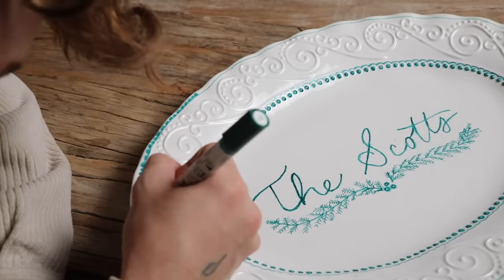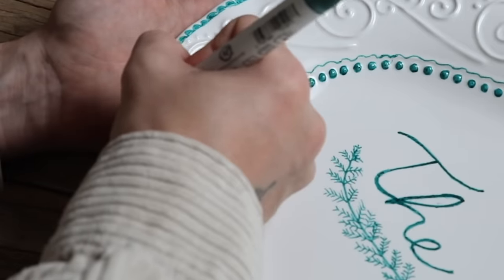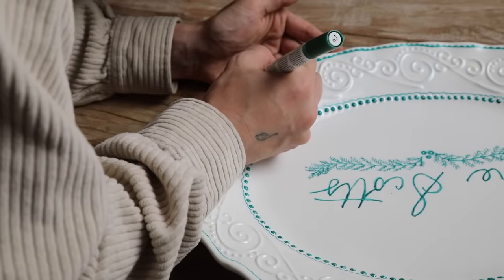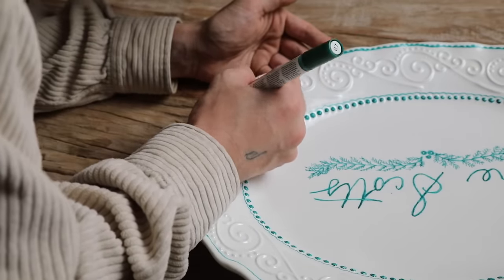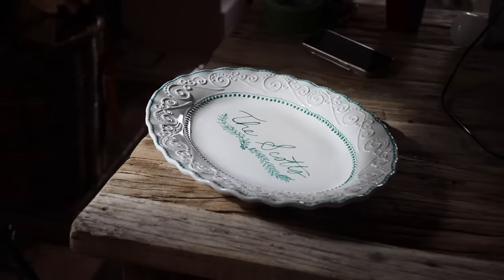Once you are all done, you're just going to follow the instructions on the marker, which is baking this in the oven for about 30 minutes, or you can let it air dry if you just want to use it decoratively. That is how you finish off your tray.